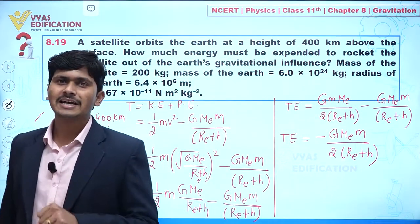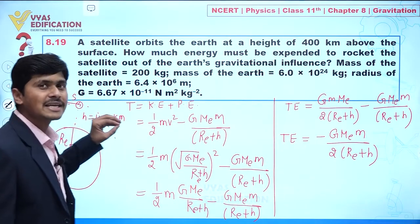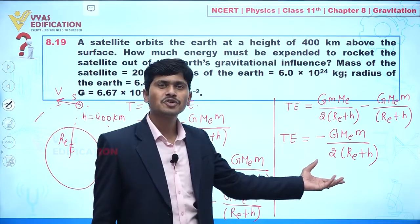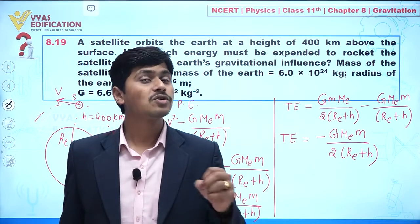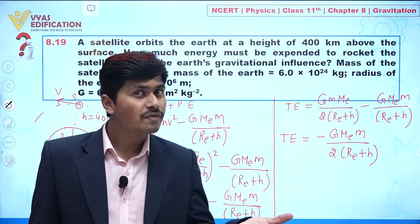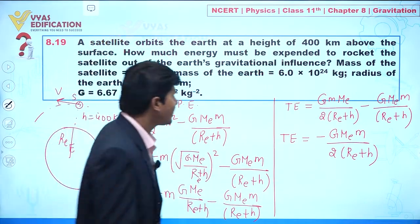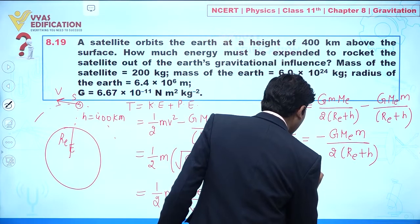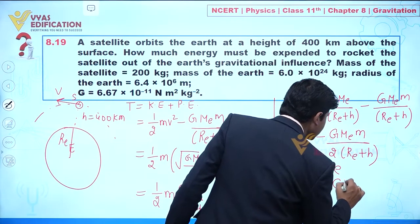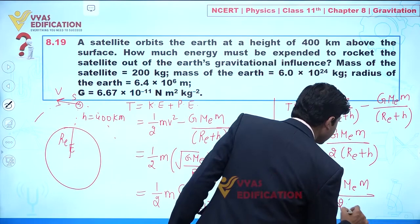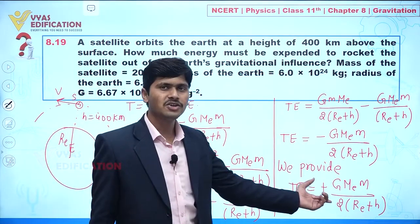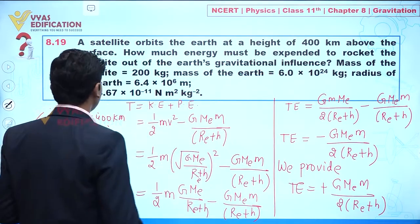This is the total energy of the satellite. If we want to send the satellite out of the gravitational field, we must provide the same amount of positive energy so the total energy becomes zero — which happens at infinity. So we must provide energy equal to plus G·Me·m divided by 2(Re + h).